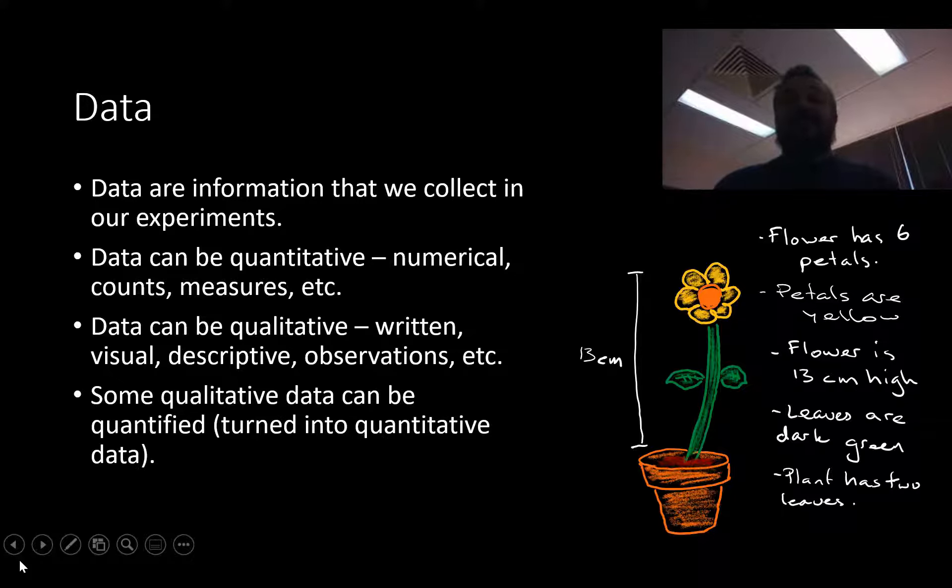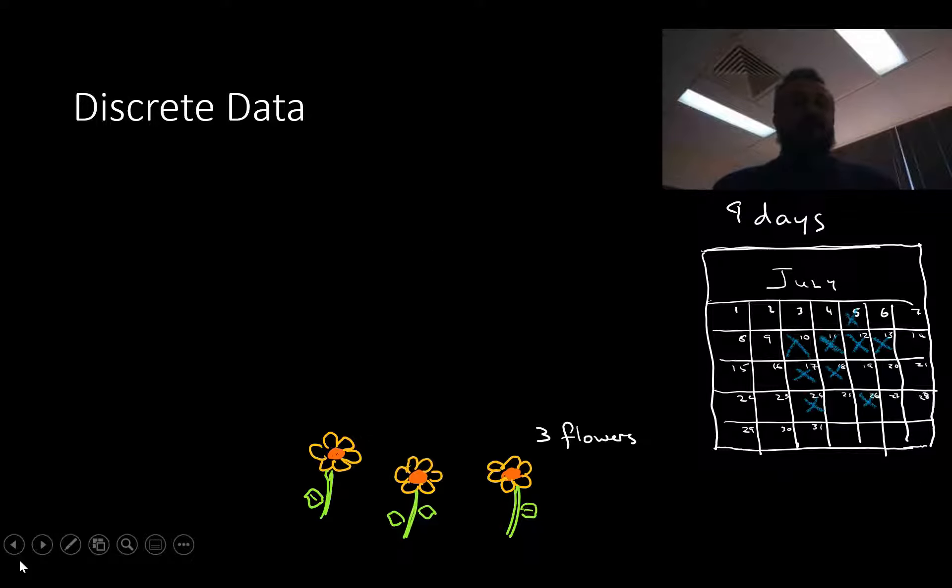Some qualitative data can be quantified. That's actually kind of cool. What this means is, we can collect a bunch of did you like it, didn't you like it, and we can code it and give it numbers, and we can turn it into quantitative that allows us to graph it. That's really interesting.